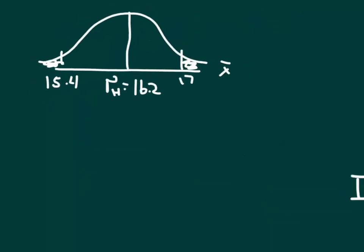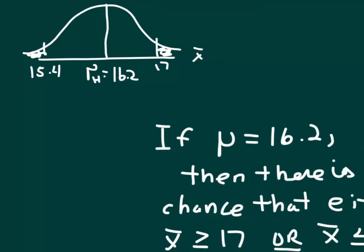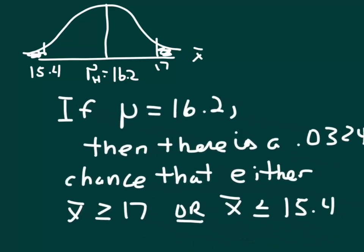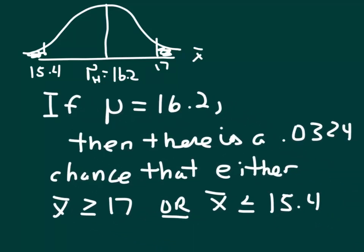Picture of the sampling distribution, now we're going to give our full-blown interpretation of the p-value. If the population mean is 16.2, if the null hypothesis is true, remember H0 was that μ equals 16.2, if that's true, then there is a p-value chance.